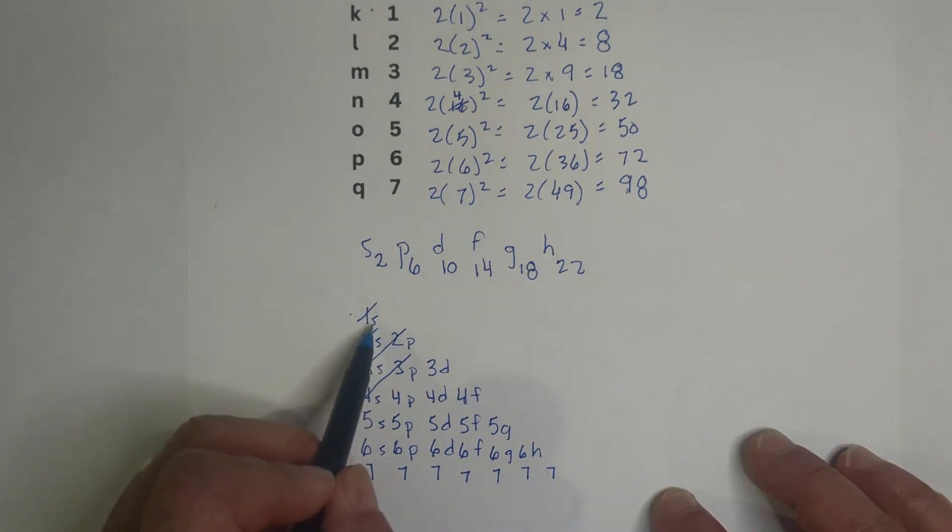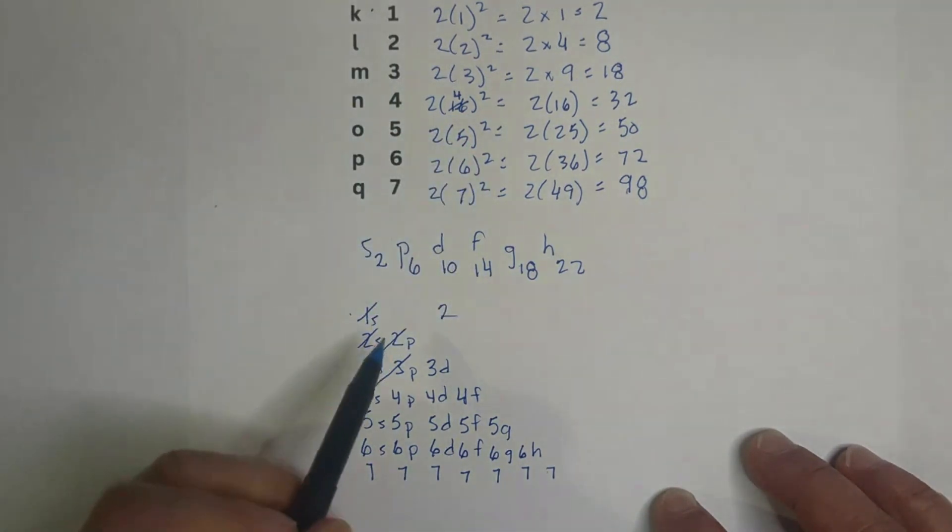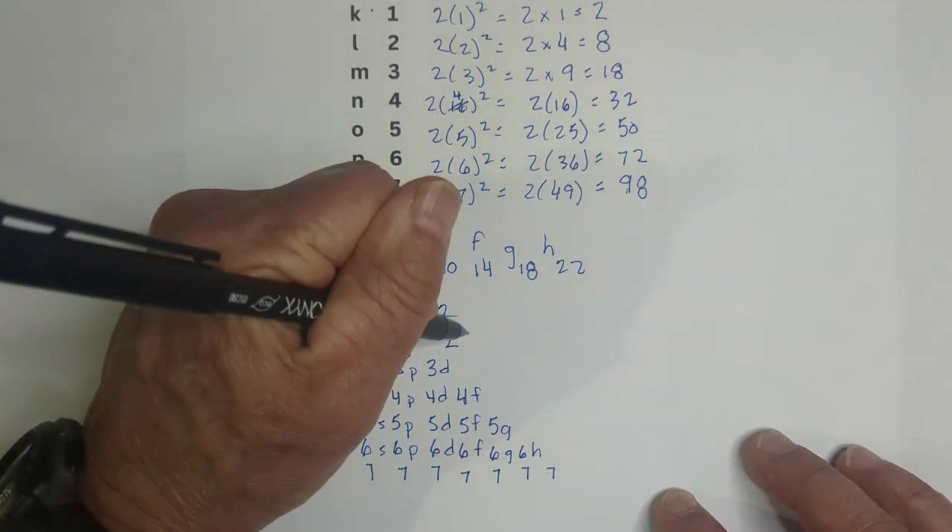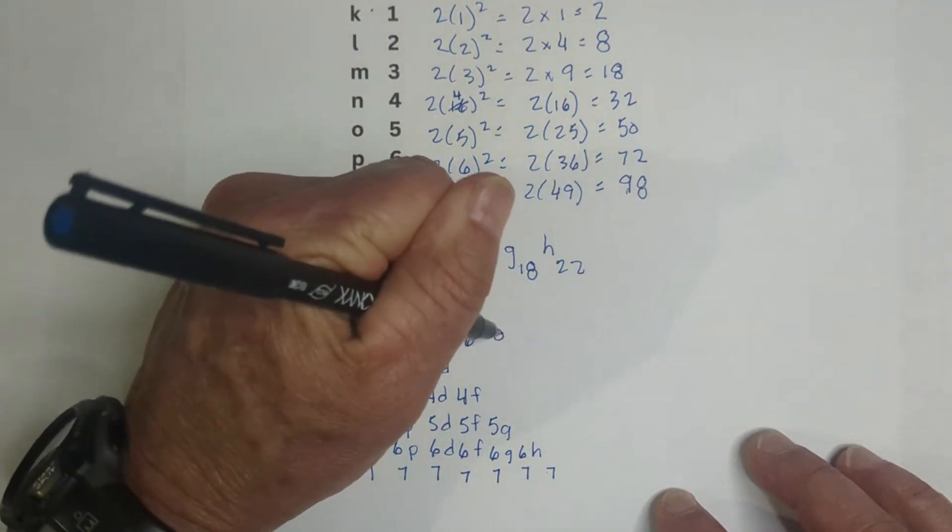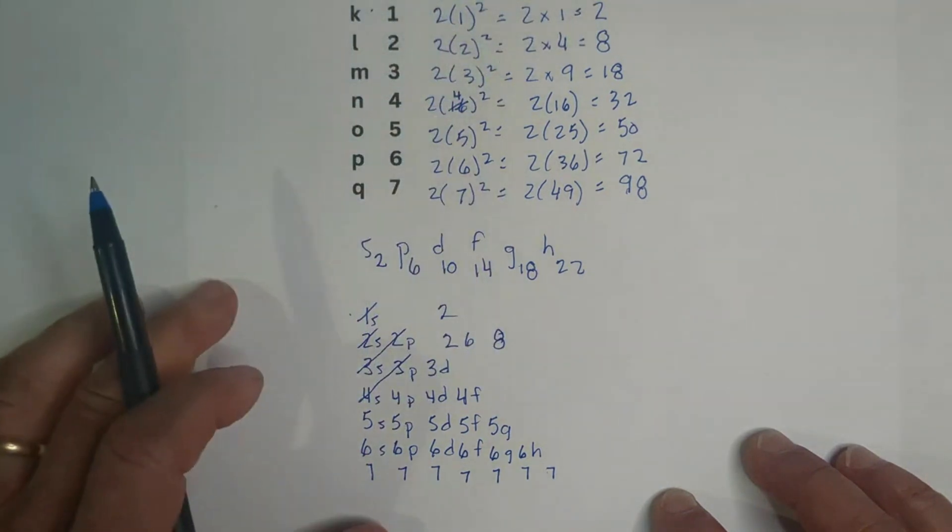So, electron shell one, you have a one S. Remember, S holds two, so you have two. And the second energy level, you have an S and a P. So, S is two. P, remember, is six. Six plus two is eight. And notice, it's the same as if you use the formula two n squared.